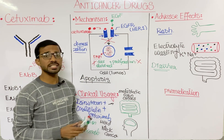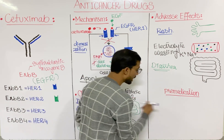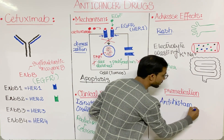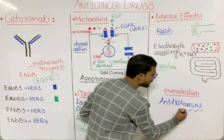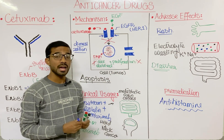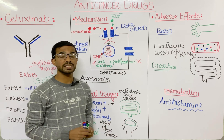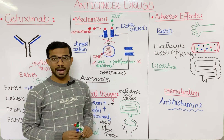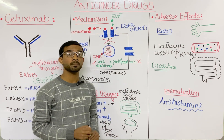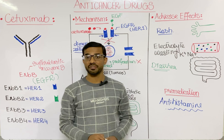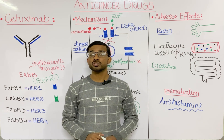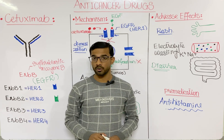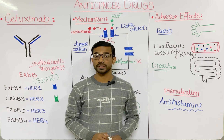Regarding pre-medications: the patient will take an antihistamine before receiving cetuximab to prevent allergic reactions, because cetuximab can cause different allergic reactions including rash. So before taking cetuximab, antihistamine is given to prevent these adverse effects. This is all about cetuximab — a monoclonal antibody used in the treatment of cancer.